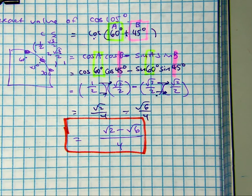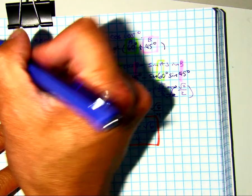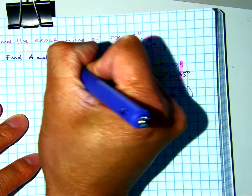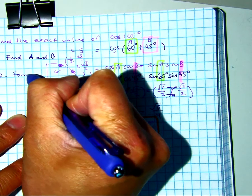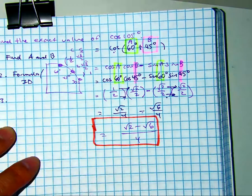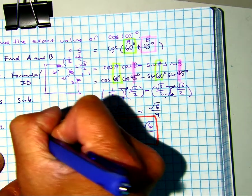If I had to summarize that in steps, I would say number one, find A and B. Two, formula or identity. Number three, substitute. And then simplify.